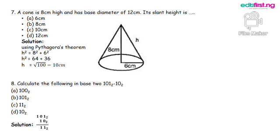We have 8 squared plus 6 squared, which gives us 64 plus 36, which will give us 100. L equals square root of 100, which gives us 10 cm. And the correct answer is option C.